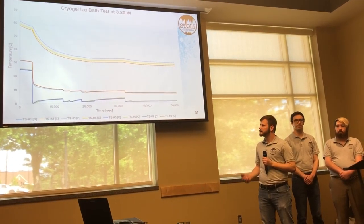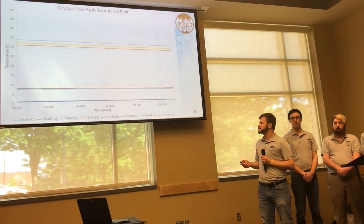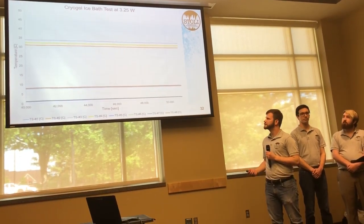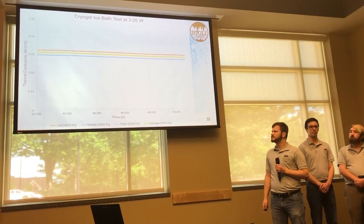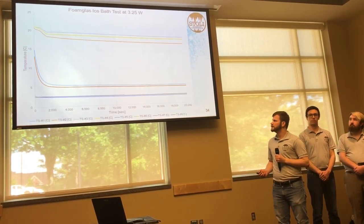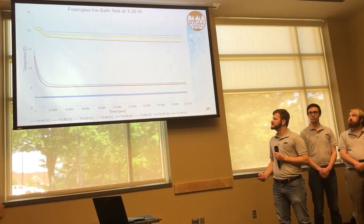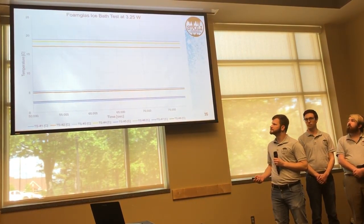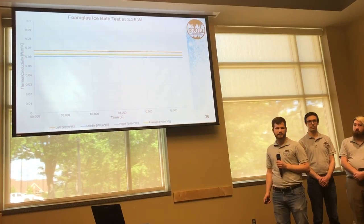This is our cryogel ice bath data. We got a temperature differential of about 30 degrees, with the end RTDs monitoring axial heat loss — we still had some. We got a thermal conductivity of about 0.032 on average, compared to the ideal value of about 0.018 for cryogel. We also did the ice bath test with foam glass, giving about a 15-degree delta T, with a measured thermal conductivity of about 0.063 compared to the ideal 0.04 for foam glass.